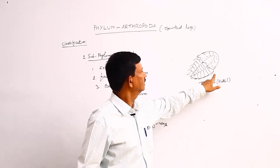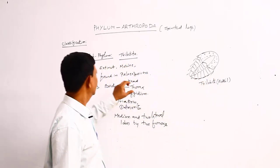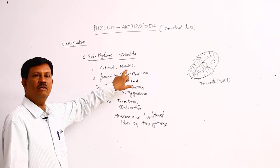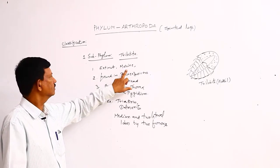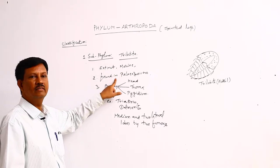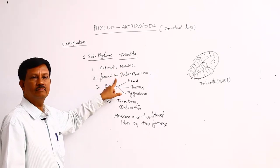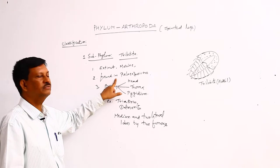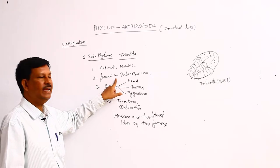This is the diagram. It is a fossil form, and they are mainly found in marine water. These trilobites are found in the Paleozoic era, and after that they became extinct.